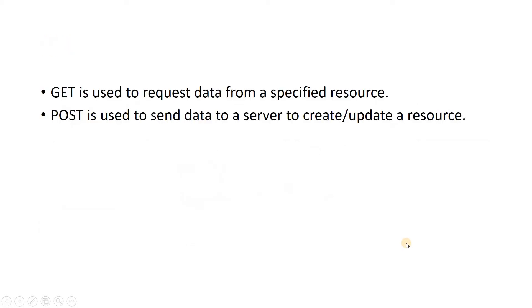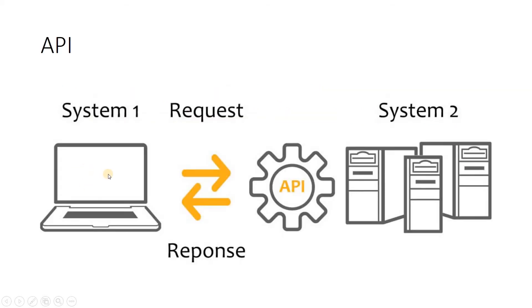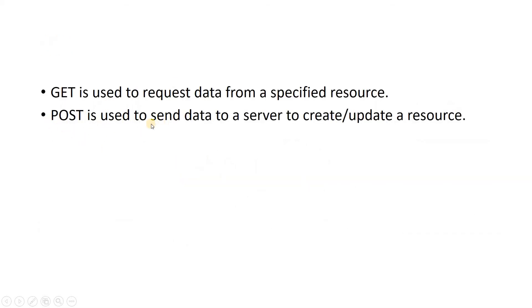Now two important HTTP methods in API you need to remember: one is GET and another one is POST. The GET method is used to request data from a specific resource - for example, when you want to know the total amount in a bank account, you use GET. The POST method is used when we want to send data to the server via API, that is, from system one we want to send some data to system two.